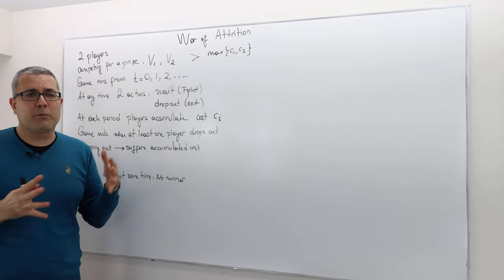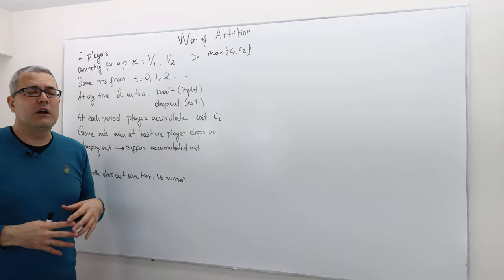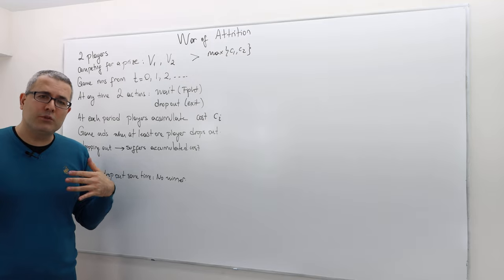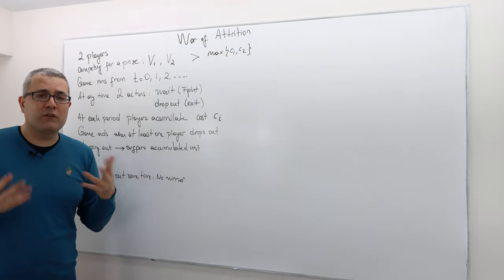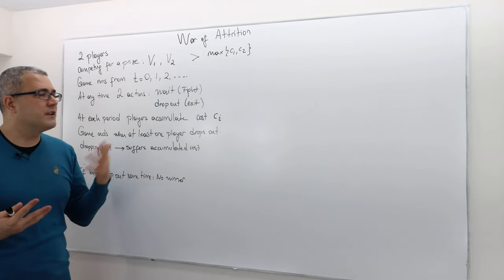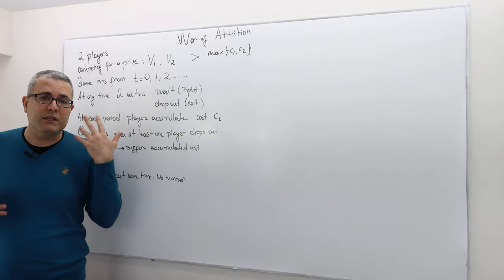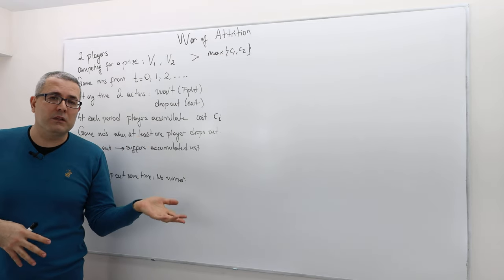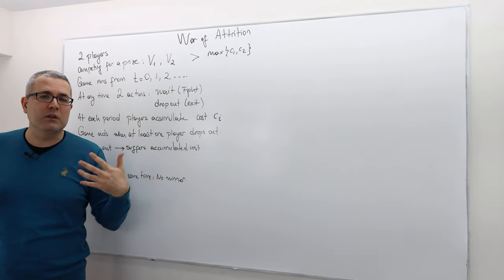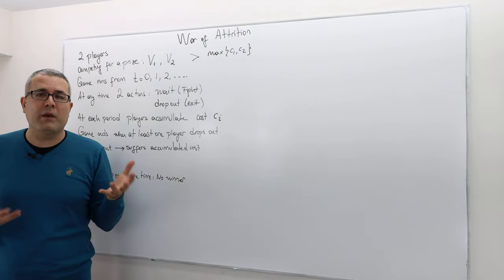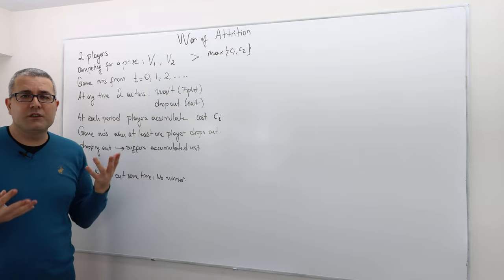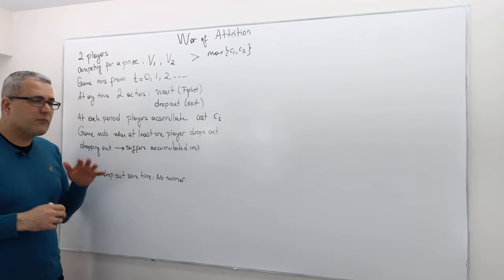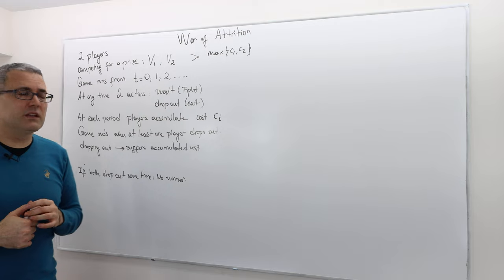The game ends if at least one of the players drops out. If player 1 drops out at some point in time but player 2 has not yet dropped out, then player 2 becomes the winner and gets the prize, and both of them suffer the accumulated cost. So if it is a boxing match, for example, there are going to be bruises — whoever drops out is the loser, but nevertheless, the cost you accumulated will be incorporated into your payoff function. So the question is: who is going to drop first? That's obviously an interesting question in many competitive real-life situations.